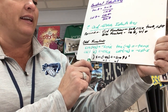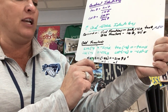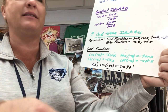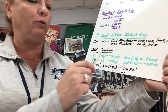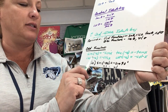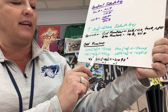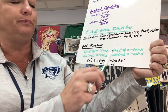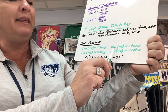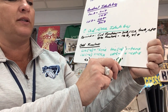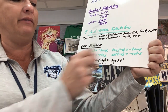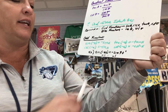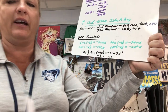All odd functions have this relationship: sine of negative x equals the opposite of sine of x — whether we call the angle x, theta, a, or b. Cosecant of negative x equals negative cosecant of x. Tangent of negative x equals negative tangent of x, and cotangent of negative x equals negative cotangent of x.